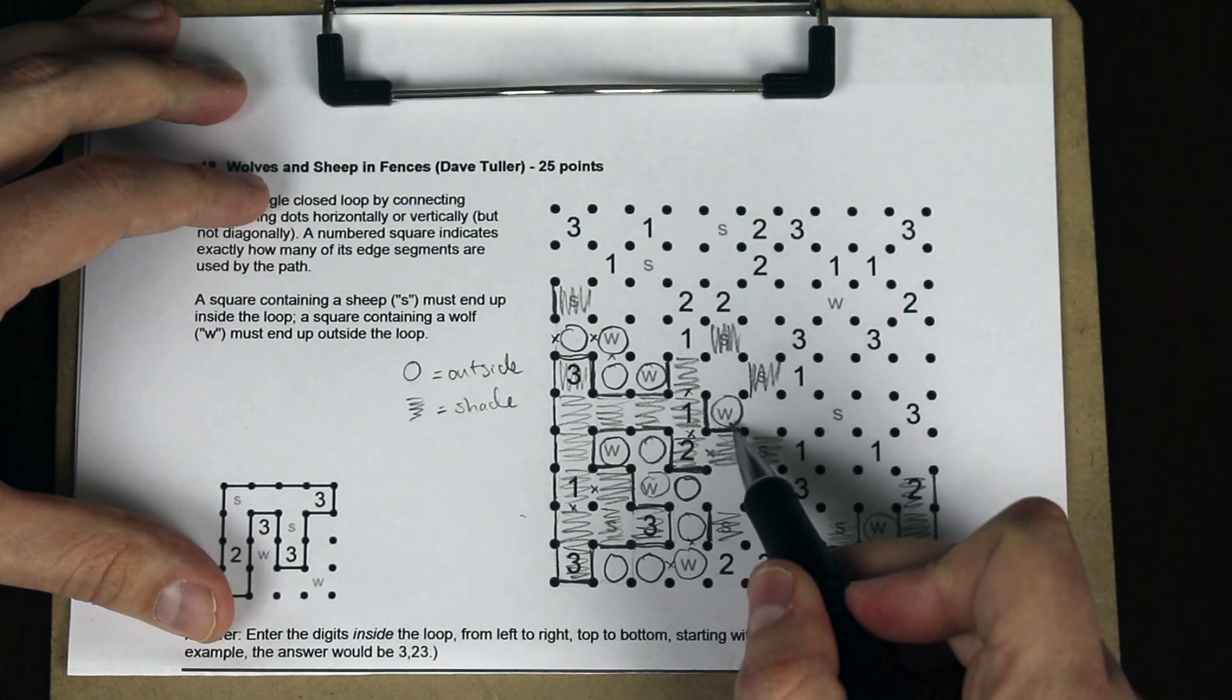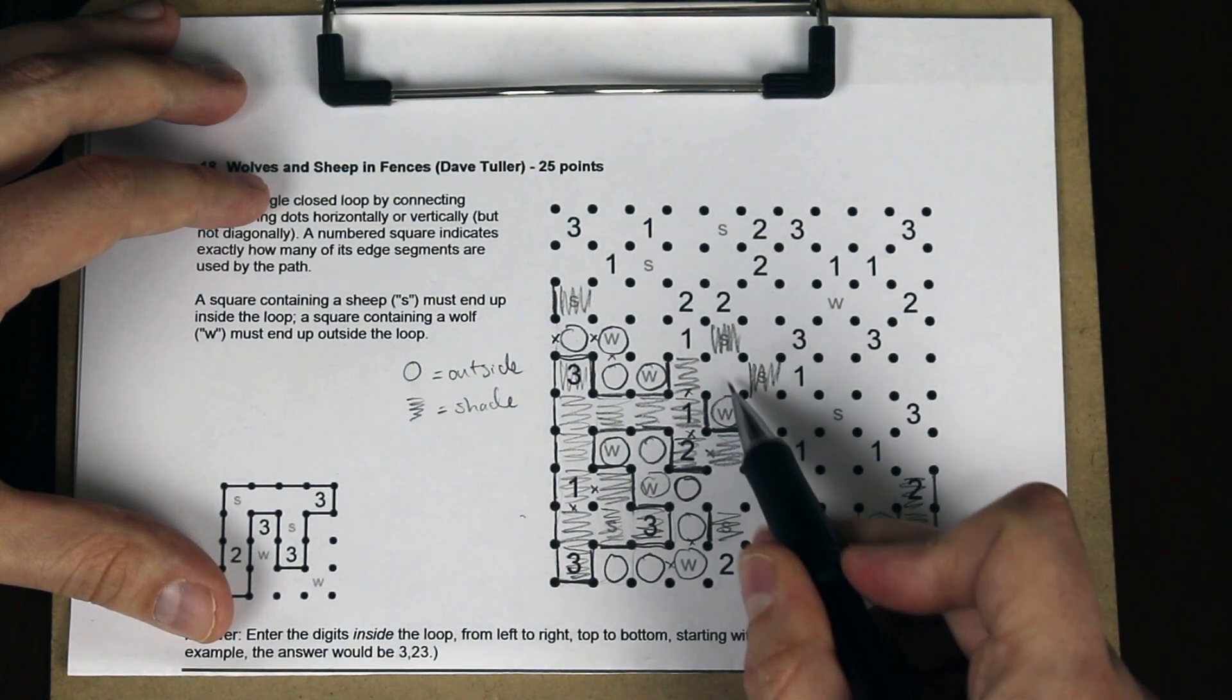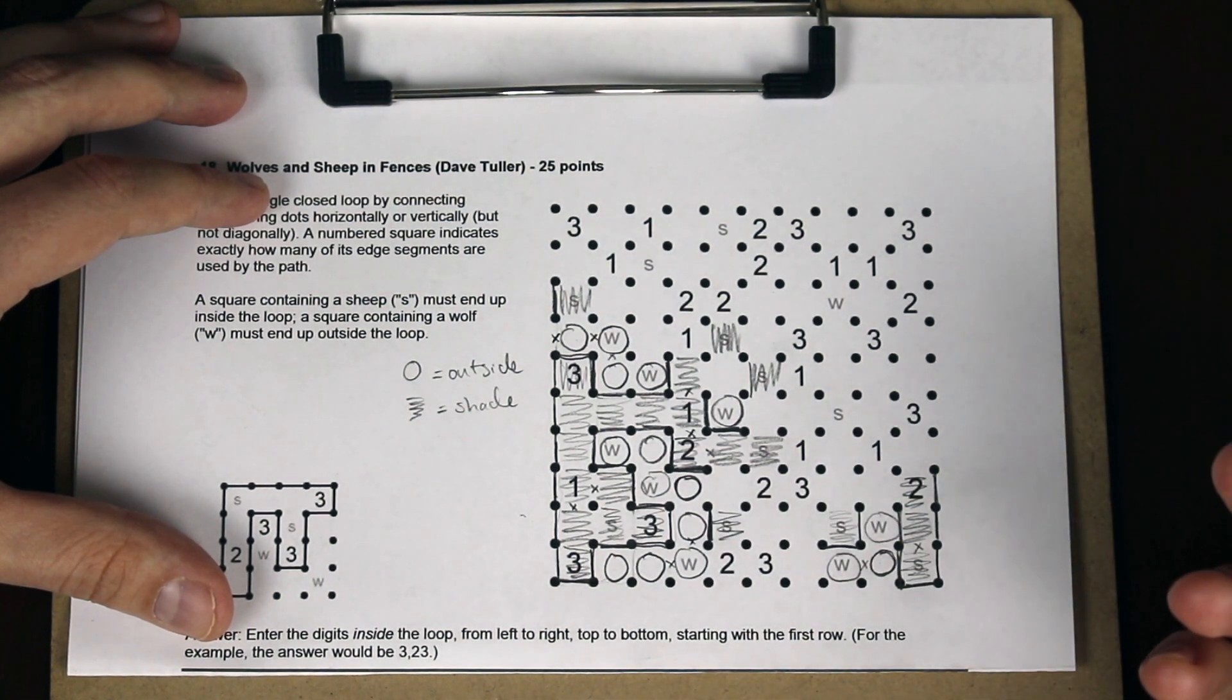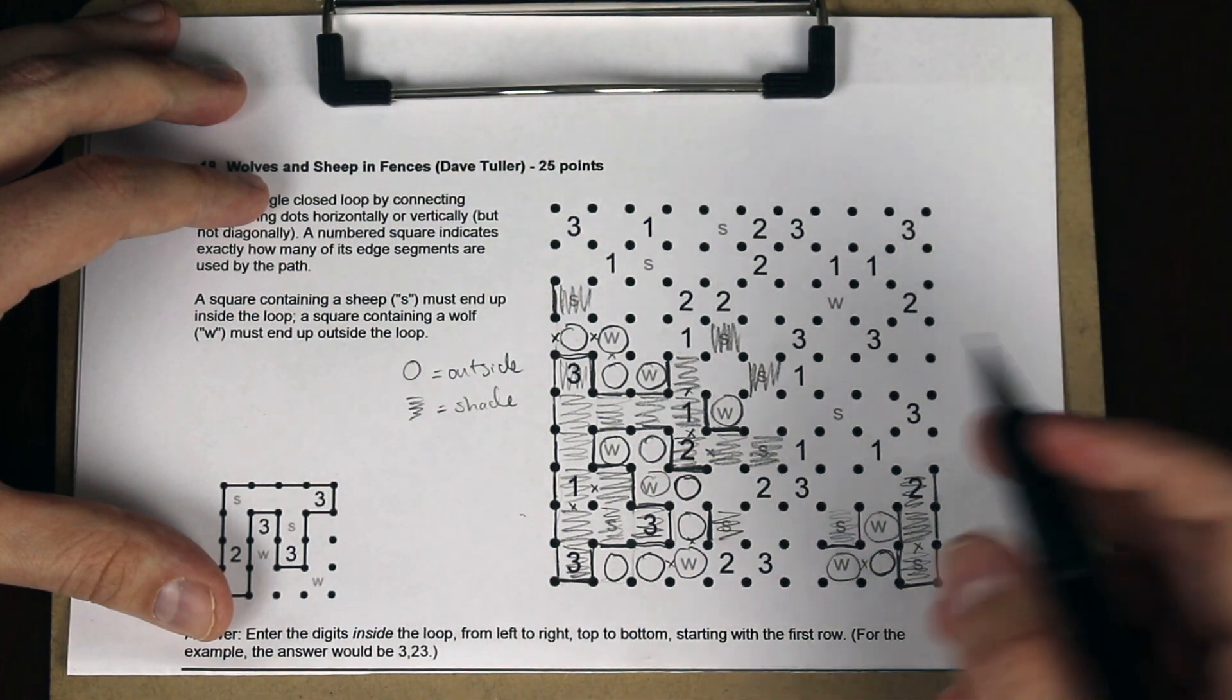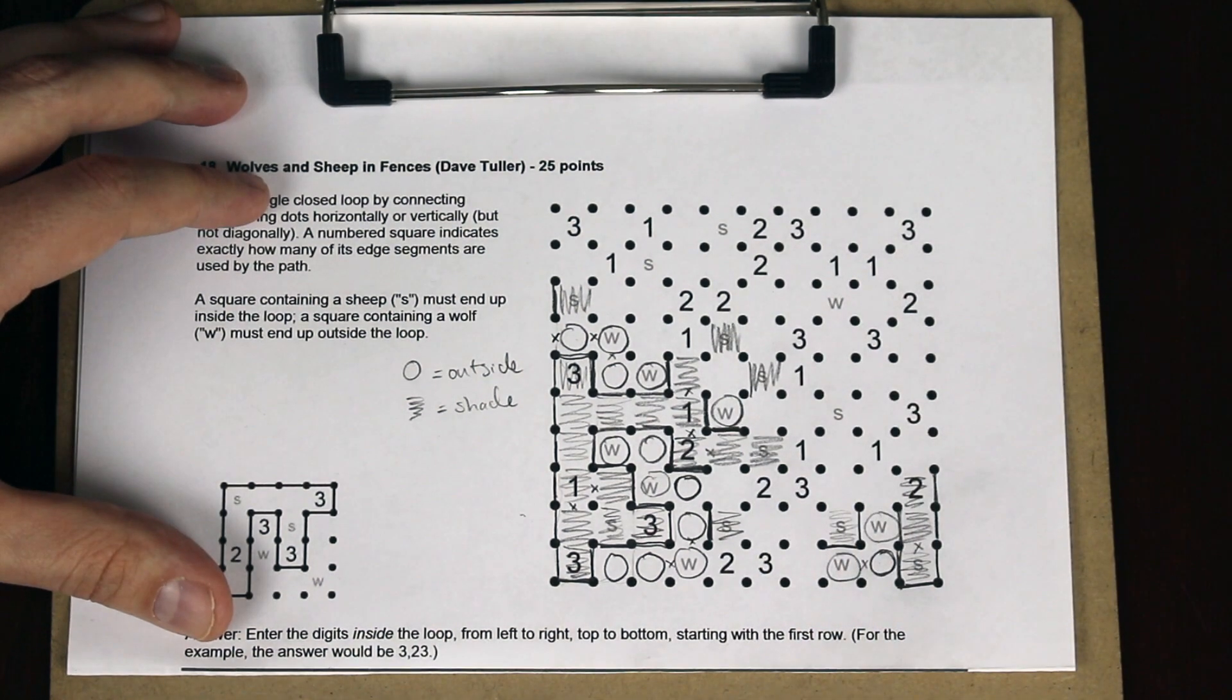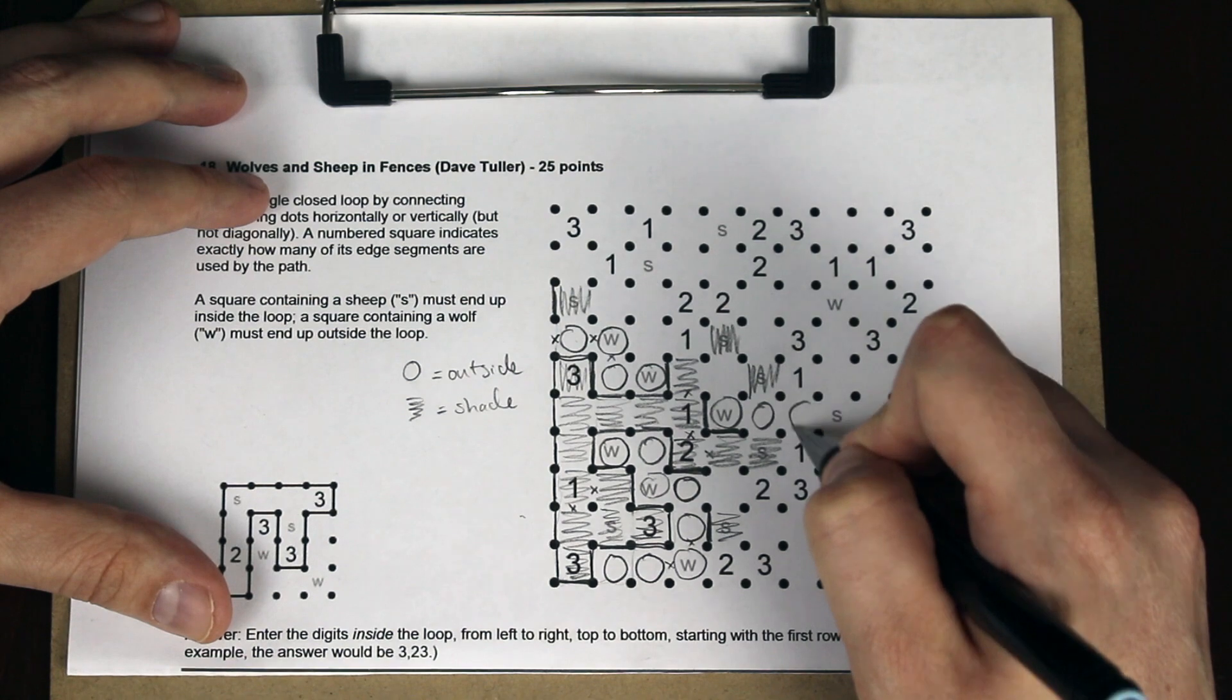And you may notice something here. That now we have a wolf inside of this region that needs to escape to the outer part. That was something we saw in the cave puzzle. It's still true here. If this wasn't able to escape, we'd have two closed loops. So this must be outside and outside.